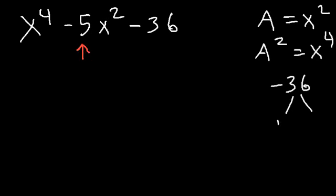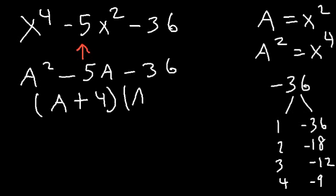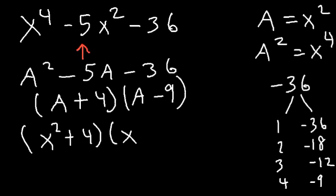We can make a list: 1 and negative 36, 2 and 18, 3 and 12, and 4 and 9. Notice that 4 times negative 9 is negative 36, but 4 plus negative 9 is negative 5. So let's replace x to the fourth with a squared and x squared with a. Now we can factor it as a plus 4 times a minus 9. Then we replace a with x squared, giving us x squared plus 4 and x squared minus 9.